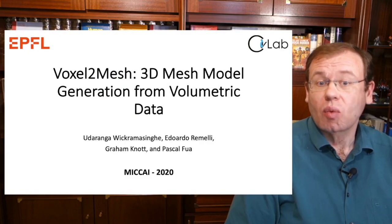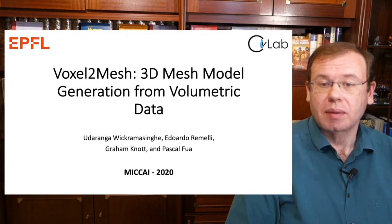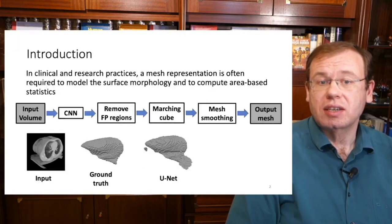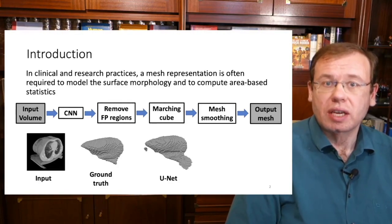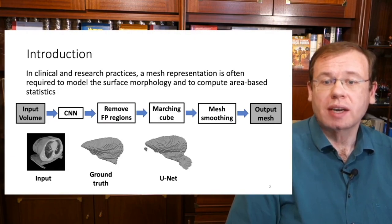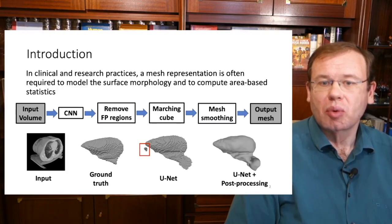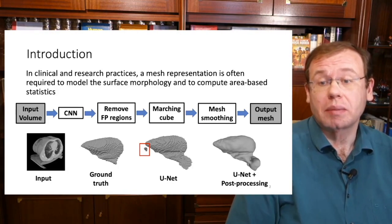The next paper I want to highlight is 'Voxel to Mesh: 3D Mesh Model Generation from Volumetric Data,' written by Udaranga Vikram Singhe and colleagues from EPFL. Their introduction notes that CNN models — essentially U-Nets — generate voxel-wise predictions that must be post-processed to remove false positives, then require the marching cubes algorithm to extract a mesh, followed by mesh smoothing to get the final output.